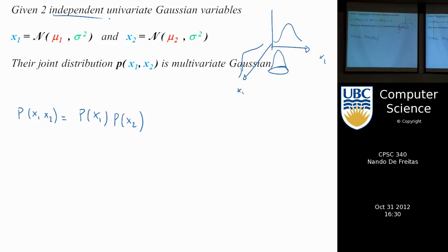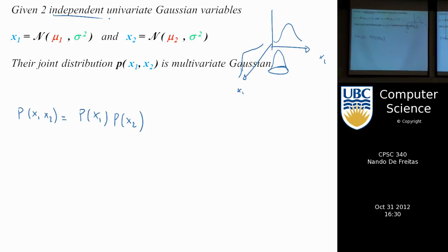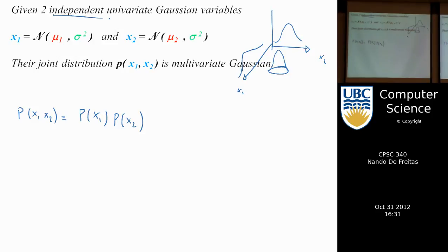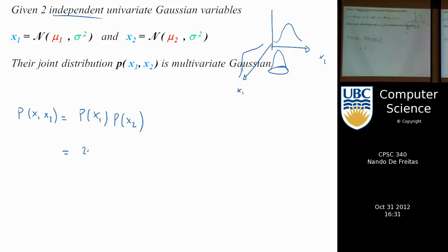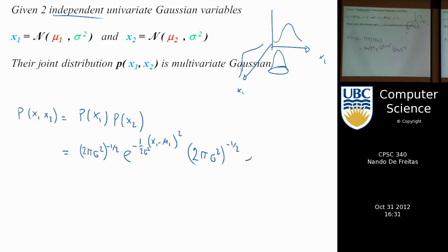Univariate just means one dimension; multivariate means multiple dimensions. In this case it's two dimensions, so I could have used the word bivariate. When I write each of these, I write the expression for each probability: 2π σ₁² to the minus one-half — that's just the expression of a 1D Gaussian — times 2π σ² to the minus one-half, times e to the minus one over 2σ² times (X2 − μ₂)².